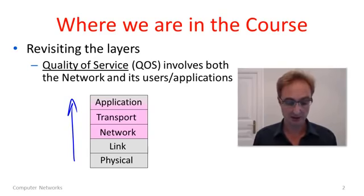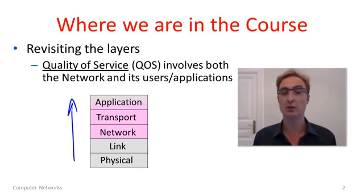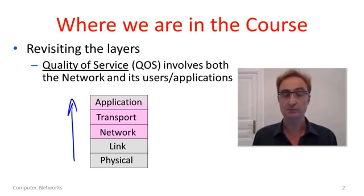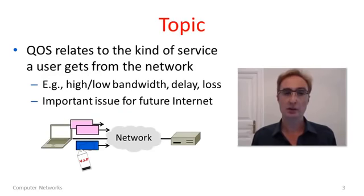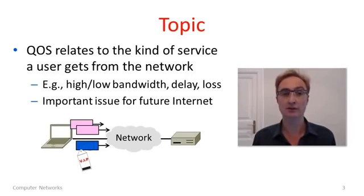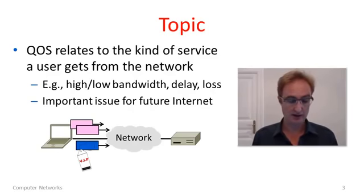It goes all the way from the application layer, because the application needs to be able to tell the network what it needs, down to the network layer, because the network is the layer which ultimately provides different kinds of network service to applications. So the topic of quality of service relates to the kind, type, or level of service that a different application or user receives from the network.